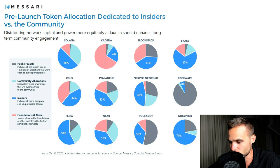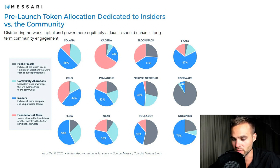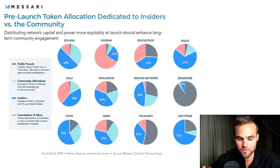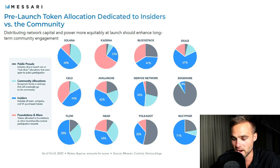From Messari.io, we can see how these are allocated. As a general rule of thumb, the less that is given to insiders, the better. If less is given to the team and to VCs at presale prices, the better, because they don't have the ability to dump on you. In a fair launch, there are no tokens given to investors, to the team, or to VCs prior.